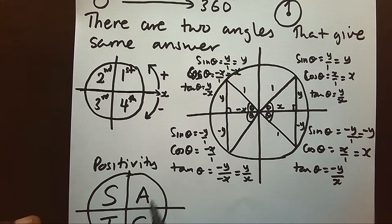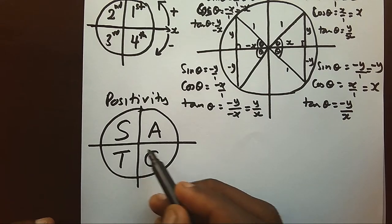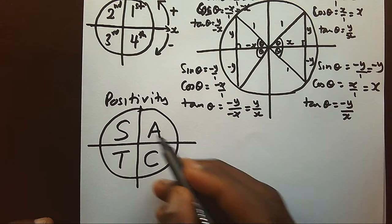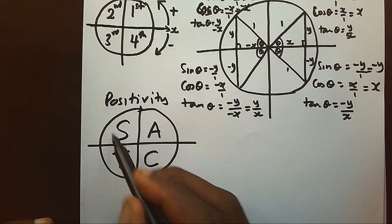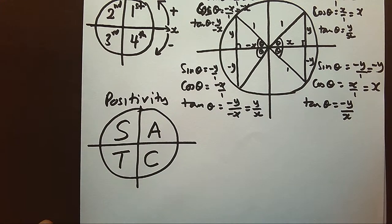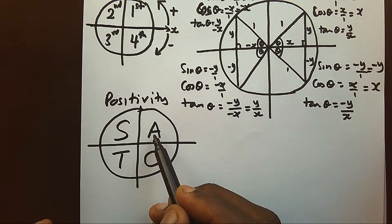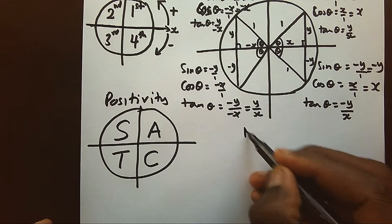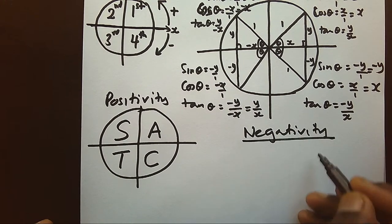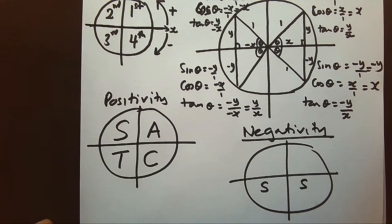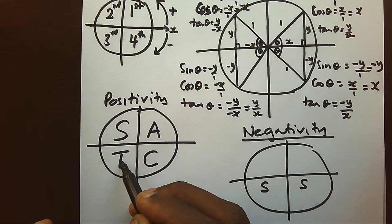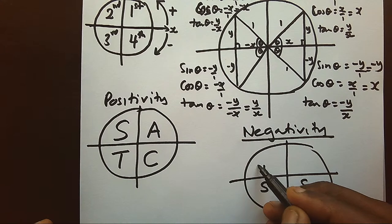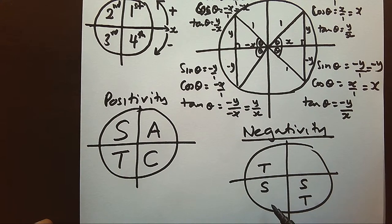From this summary, in the first quadrant all three are positive; in the second quadrant only sine is positive; in the third quadrant only tangent is positive; and in the fourth quadrant only cosine is positive. We can remember this with the mnemonic 'All Students Take Chemistry.' Since sine is positive in the first and second quadrants, it will be negative in the third and fourth. Similarly, tangent is negative in the quadrants where it is not positive.